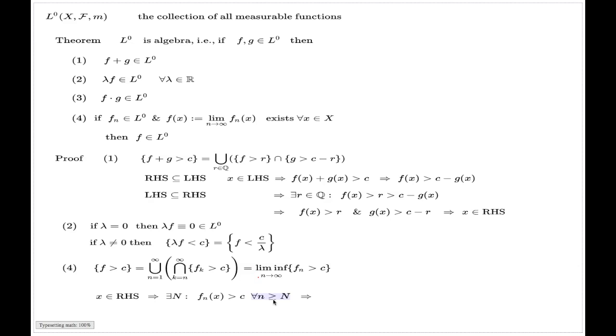Now using the properties of limits, if you have a numerical sequence which is bigger than some number c for all n starting from some point, then the limit of such a sequence will also be bigger than c, given that the limit exists. But here we have the assumption that the limit exists, bigger than c, and that's the direct interpretation of the fact that x belongs to the left hand side.